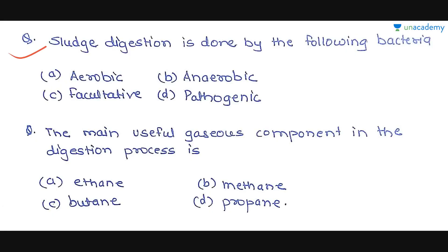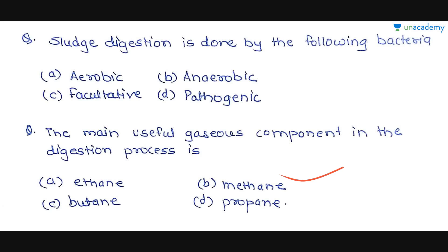The next question is: sludge digestion is done by which bacteria? Sludge digestion is carried out by anaerobic bacteria. The next question is: the main useful gaseous component in the digestion process is — option A is ethane, option B is methane, option C is butane, and option D is propane. In a digestion process, methane is evolved and it is very useful because it has a good calorific or fuel value. So option B, methane, is the correct answer.